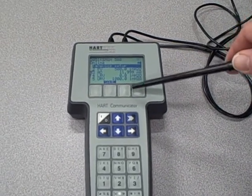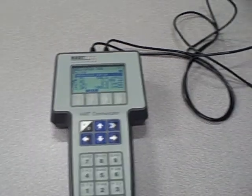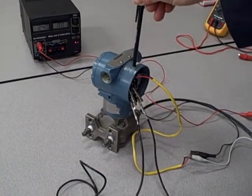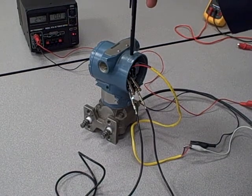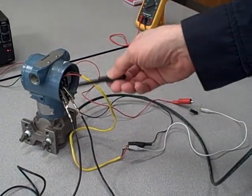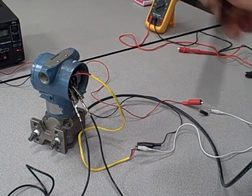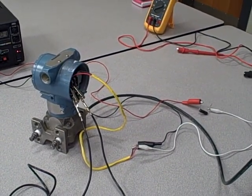Here we have a Rosemount Hart Model 275 communicator talking digitally to a Rosemount Model 3051 differential pressure transmitter. It is communicating using the Hart protocol, which is interjecting AC voltage and current signals along the same two wires that carry the 4 to 20 milliamp DC signal.